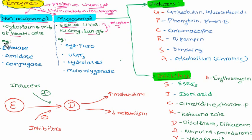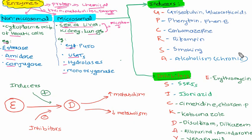Examples of non-microsomal enzymes include esterase, amidase, and conjugase. Examples of microsomal enzymes include cytochrome P450 enzymes, UDP-glucuronosyl transferases, hydrolase, and monooxygenase enzymes. That is a brief introduction to microsomal and non-microsomal enzymes.